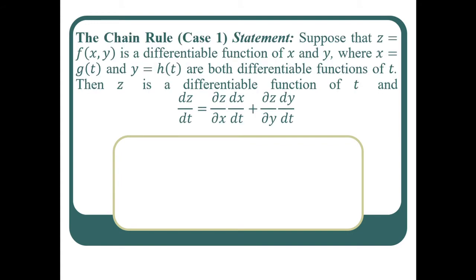Suppose that z = f(x, y) is a differentiable function of x and y, and x and y are given by x = g(t) and y = h(t), which are both differentiable functions of t. Then z is a differentiable function of t and the derivative dz/dt is equal to (∂z/∂x)(dx/dt) + (∂z/∂y)(dy/dt).